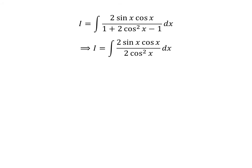1 and minus 1 cancel out in the denominator. So, we are left with integration of 2 times sine of x times cosine of x upon 2 times square of cosine of x with respect to x. Cancelling out the common factors 2 and cosine of x in the numerator and the denominator gives us I is equal to integral of sine of x upon cosine of x with respect to x.